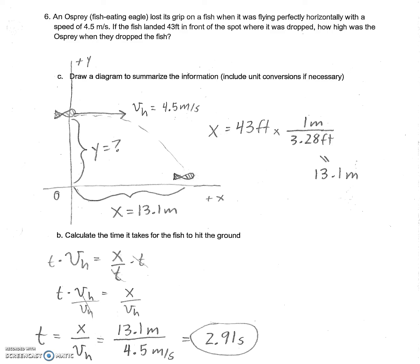Since we don't know our horizontal distance, we can't use the square root of 2 dv over g to calculate our time. So we're going to have to take our horizontal distance, or x, and divide it by our horizontal velocity. So we're going to take 13.1 meters and divide it by 4.5 meters per second, and that's going to give us the time of 2.91 seconds.